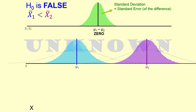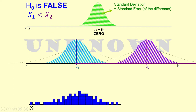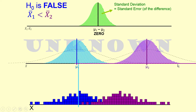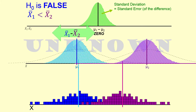Now imagine the null hypothesis is false. Well, it doesn't change anything except where we think our means came from. The distribution according to the null hypothesis is the same. Our sample mean difference is the same. Our t-value is going to be the same.